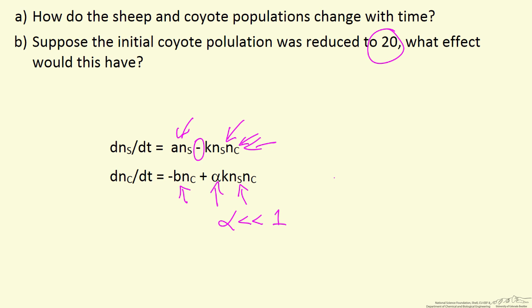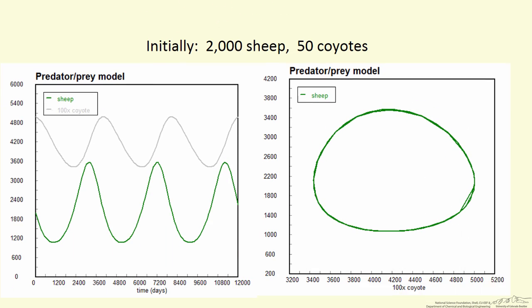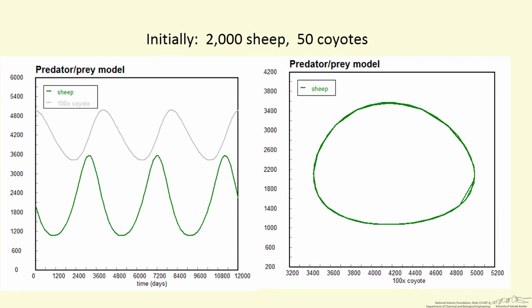Here's the model. We're going to solve this initial value problem. We have initial conditions and values for the constants. What I'm showing you are plots on the left showing the numbers. This is sheep,